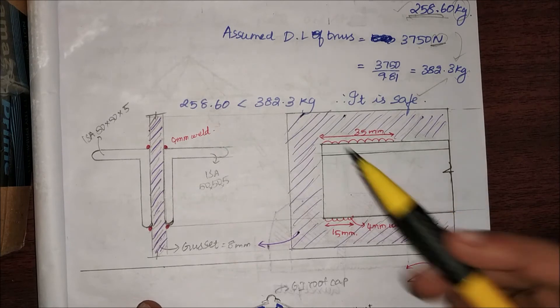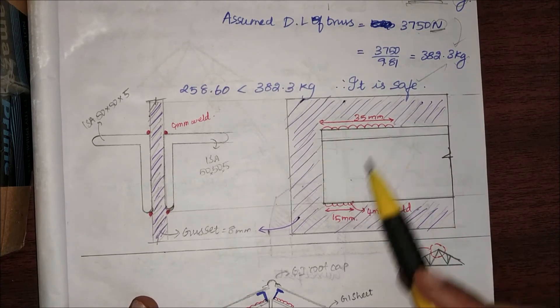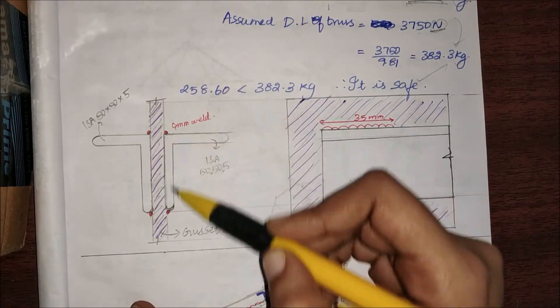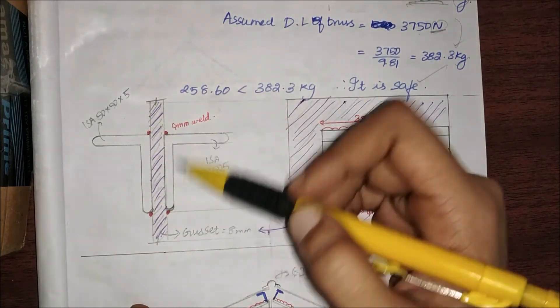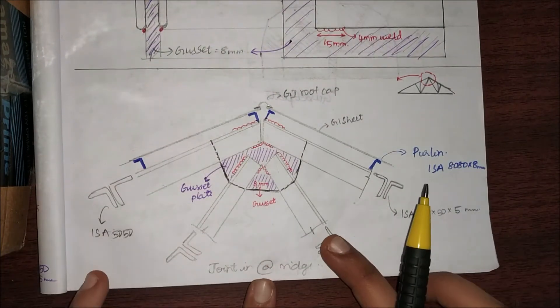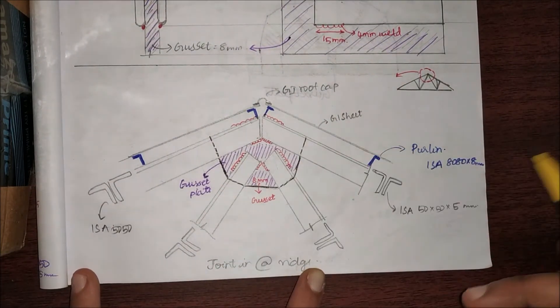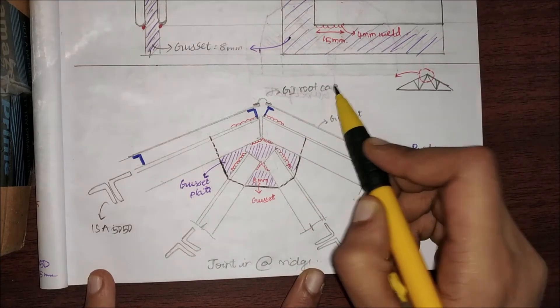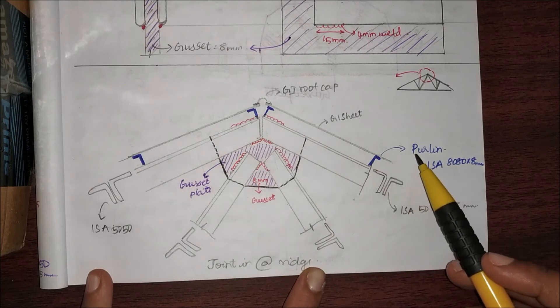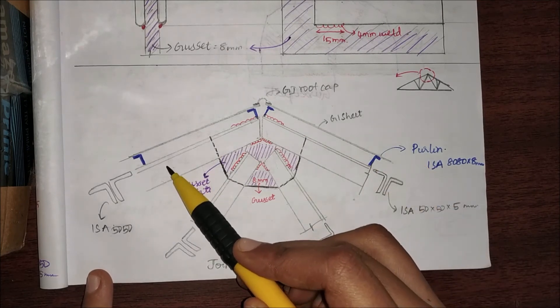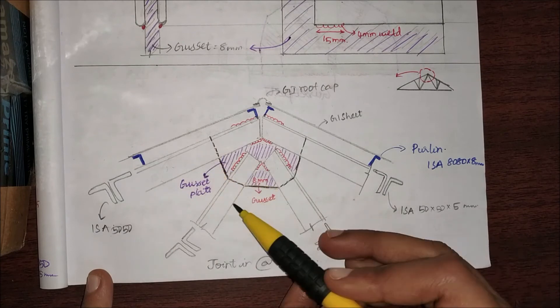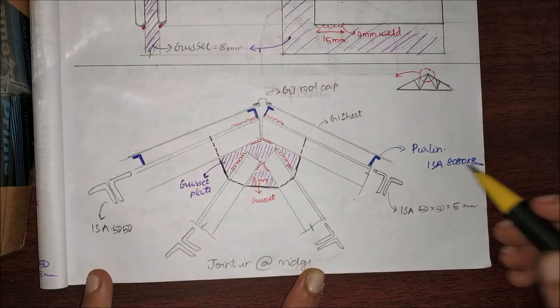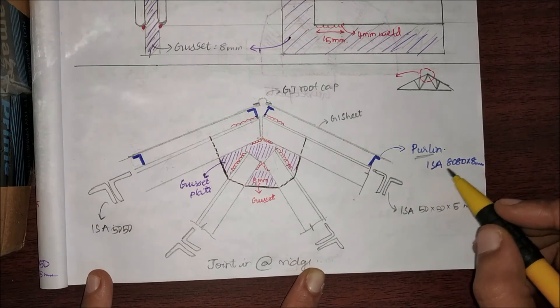So with this we come to the end of the video. I just have small connection details for you. This is how my welding will be: here 35 mm, here 15 mm. My welds are going to be present—I'm not going to provide any vertical welds. This is my connection on the top part of the truss at this part. This is my GI roof cap, these are my purlins (the blue color ones), and these are my angle sections, the truss members that we found earlier.